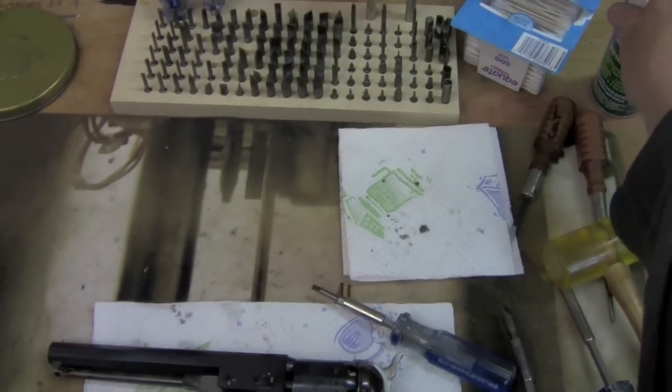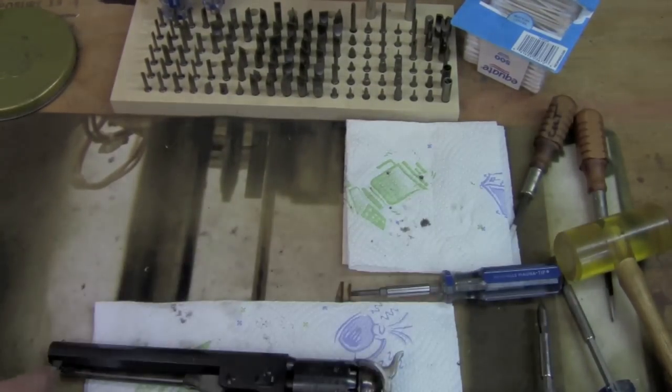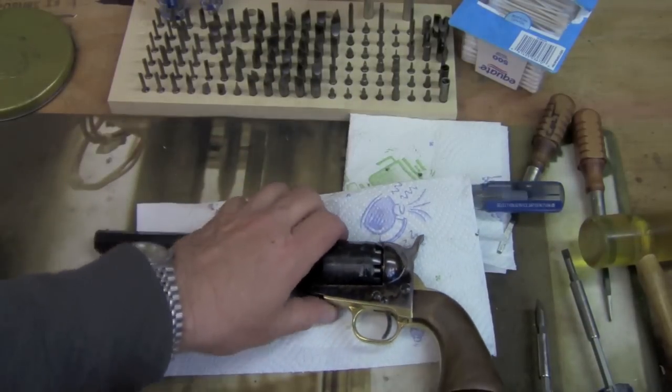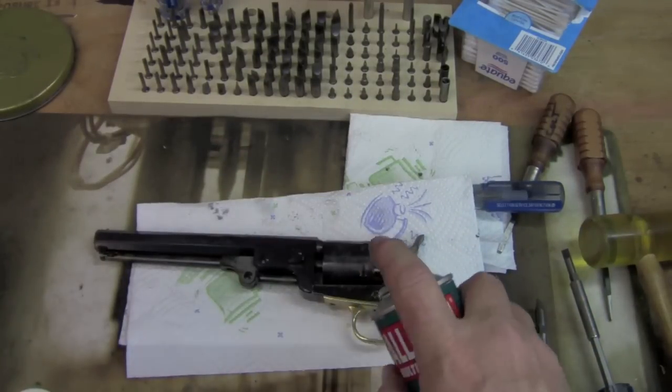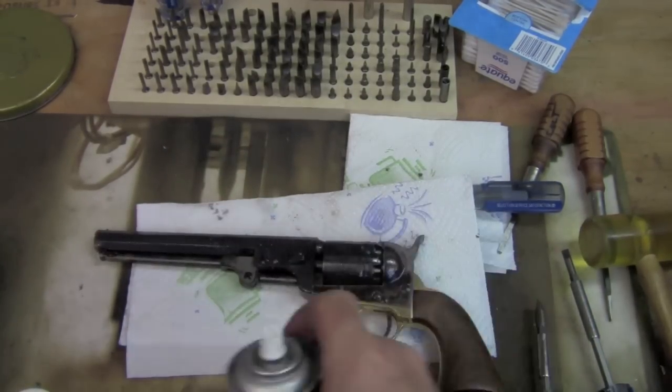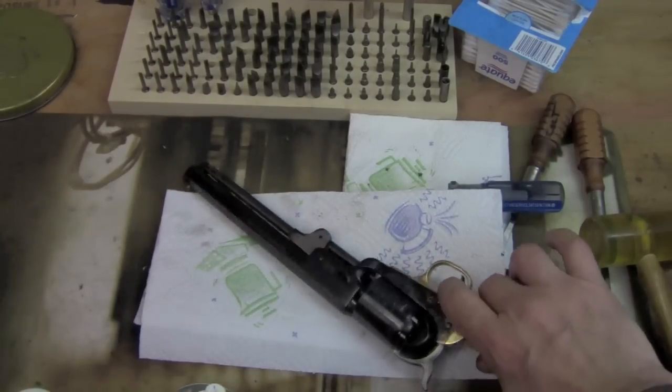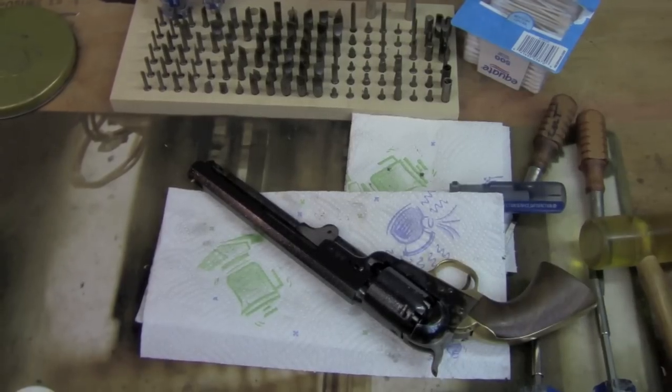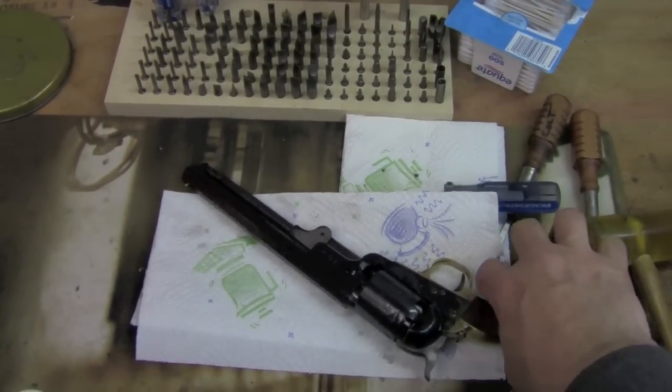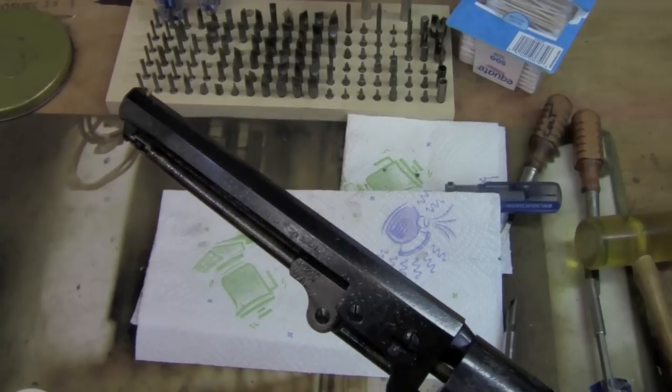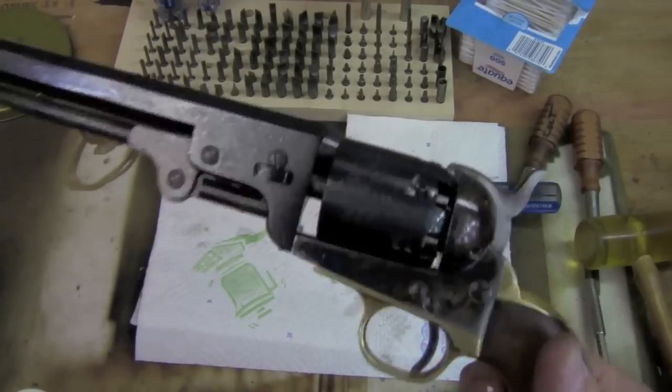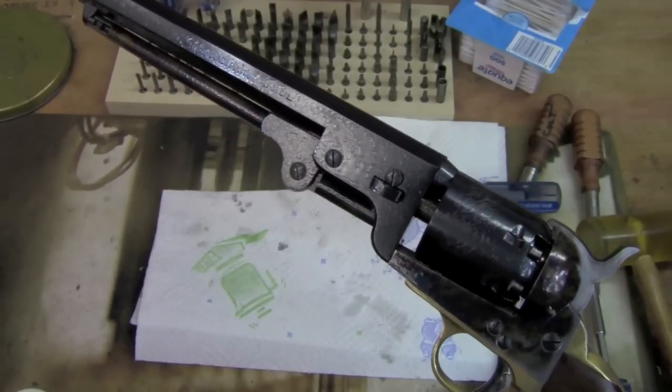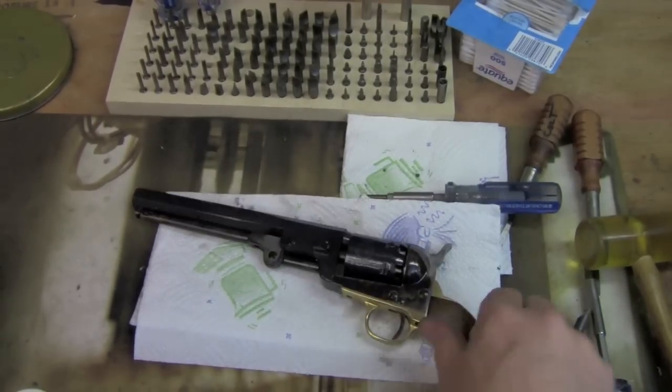Alright. Now for me the last step is I'm just going to spray this gun where you can see it. I'm going to give it a fast spray of pure aerosol Ballistol. And I'm going to put it aside. And I'm going to let that sit for five ten minutes. And then I'm going to wipe it off with a rag. And then it'll be good to put away. So that's it. Disassembly, cleaning, and reassembly of Colt cap and ball revolvers. Go shoot them up and have fun.